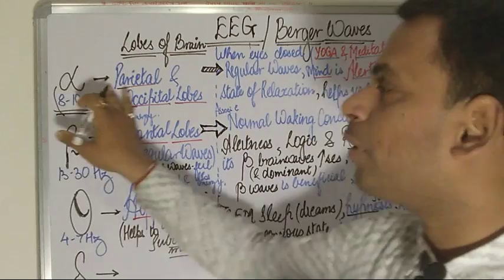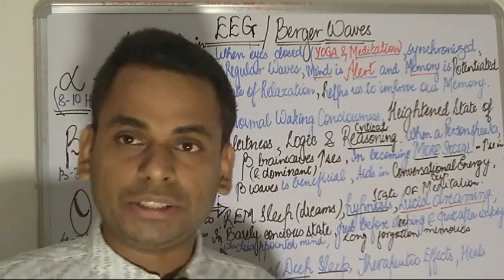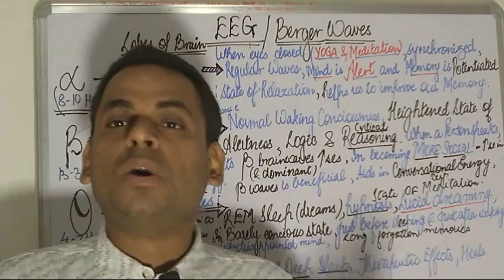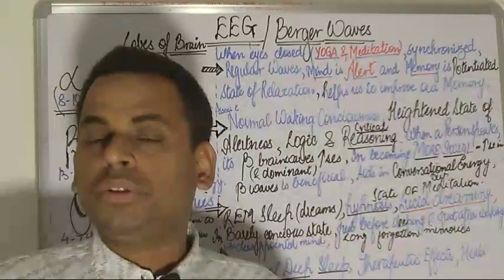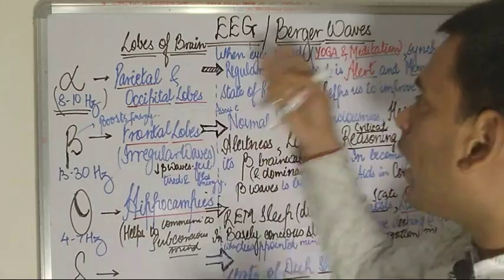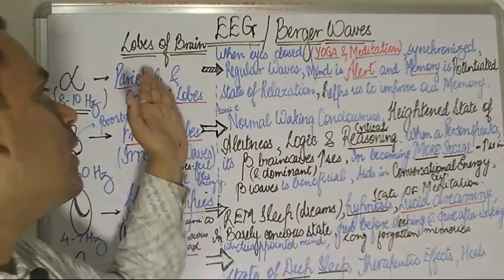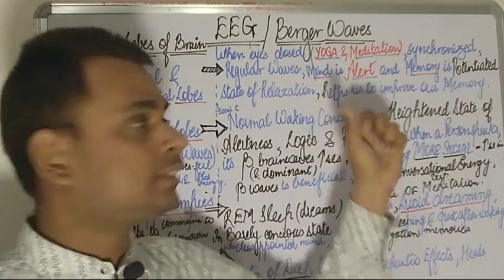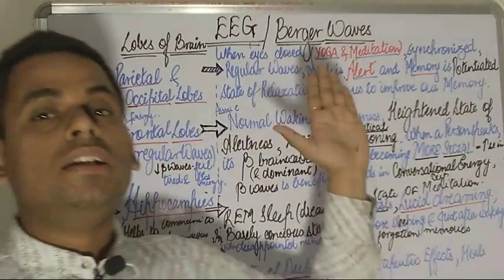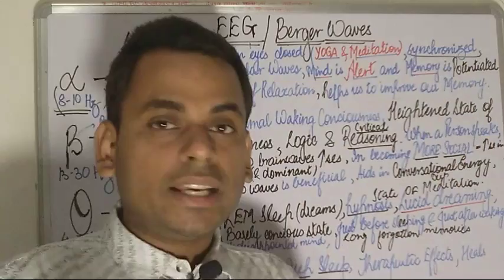The questions asked in PG entrance examinations ask about conditions — for example, the waves produced during yoga or meditation. Out of alpha, beta, theta, and delta, we need to select. The alpha waves, with a frequency of 8 to 10 hertz produced in the parietal and occipital lobes, are always synchronized waves. They are produced when the eyes are closed, such as in yoga or meditation.